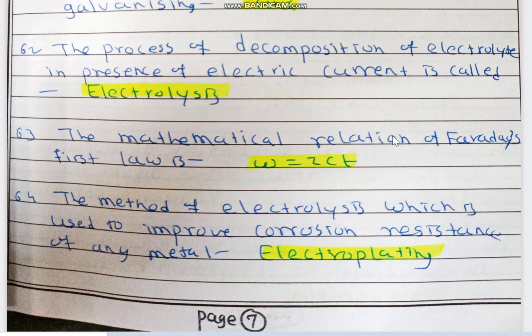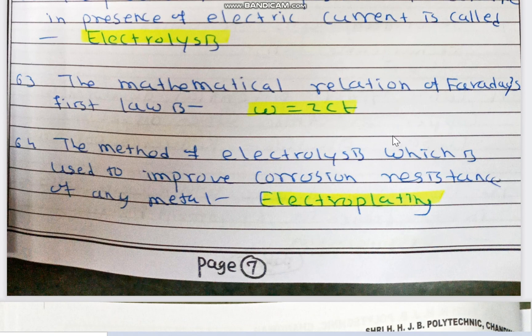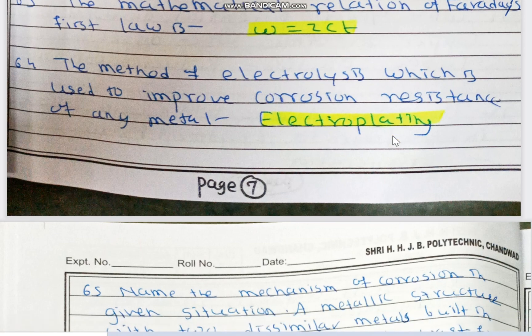The mathematical relation of Faraday's first law is W = ZCT, where W is weight, Z is a constant, C is current in amperes, and T is time in seconds. The method of electrolysis used to improve corrosion resistance of any metal is known as electroplating.